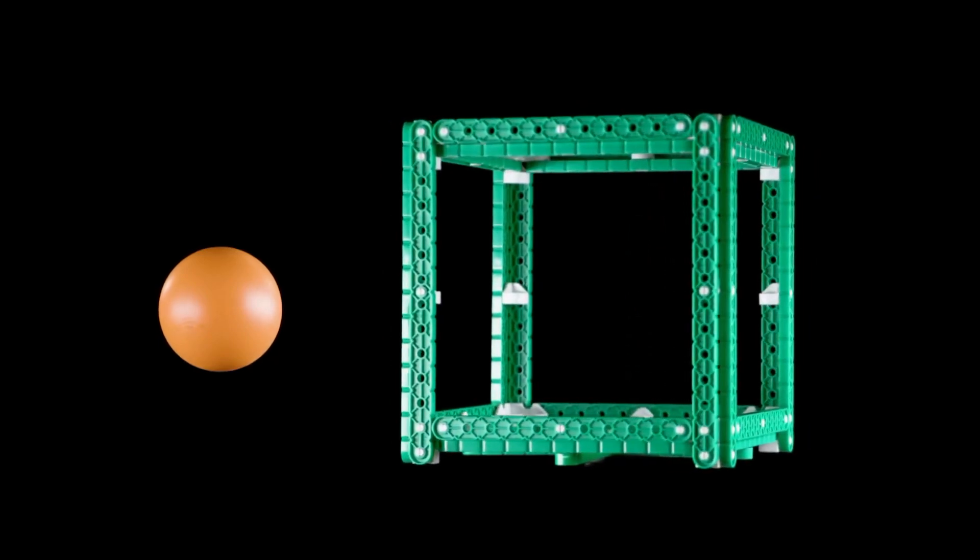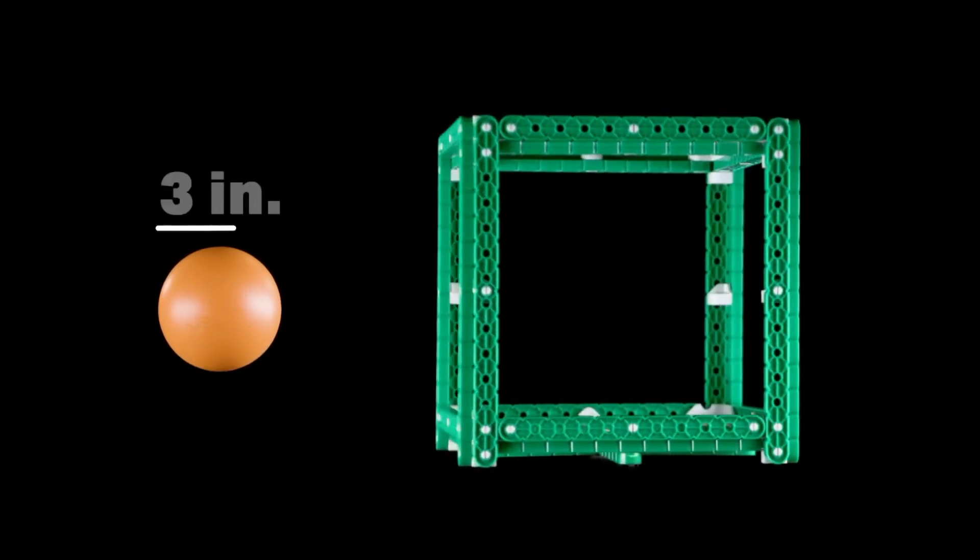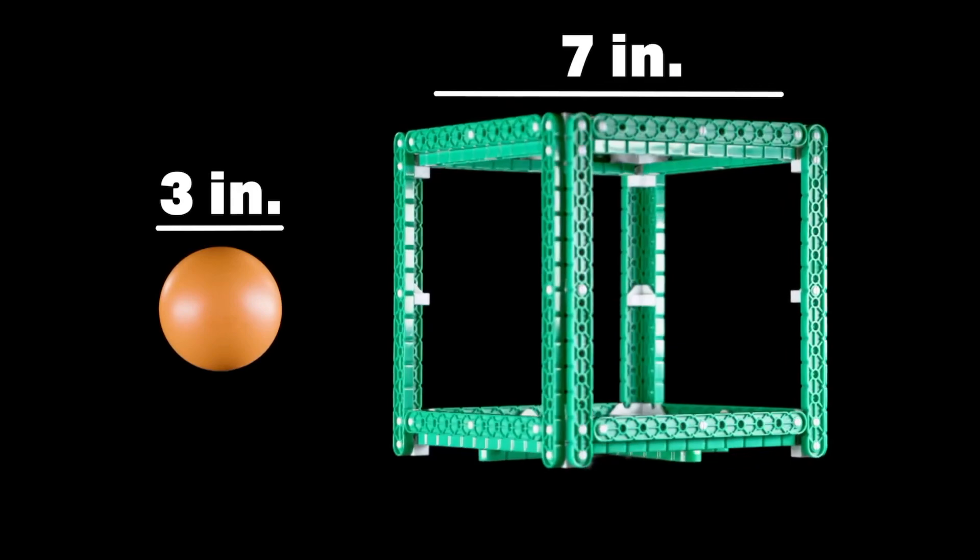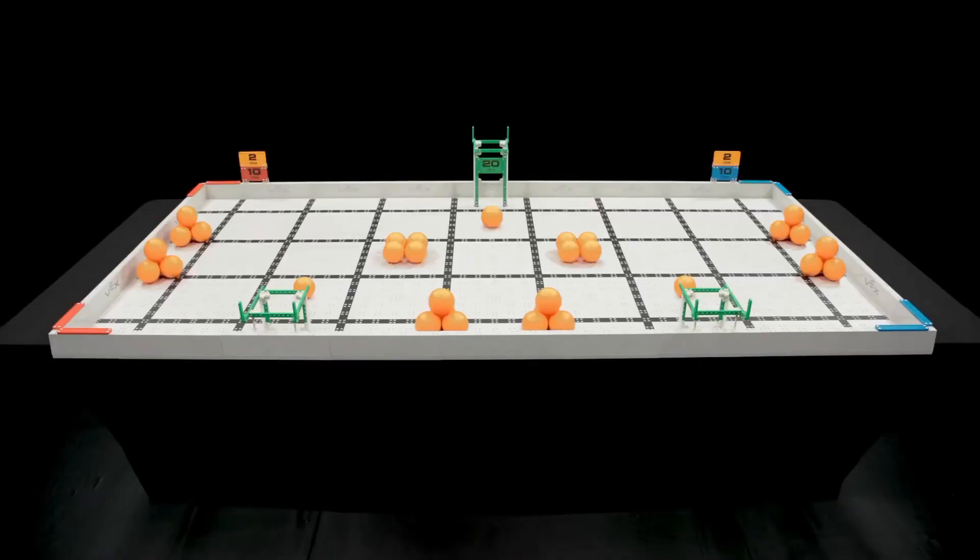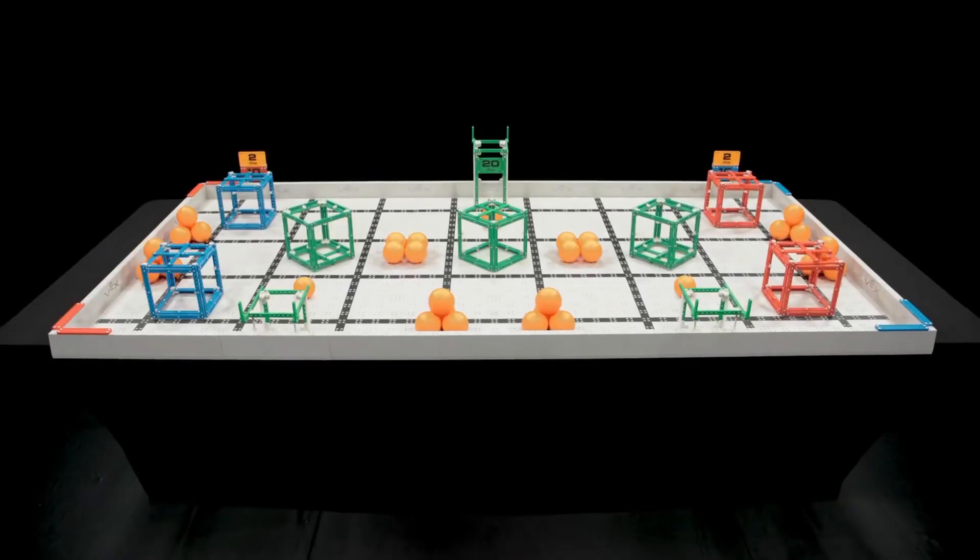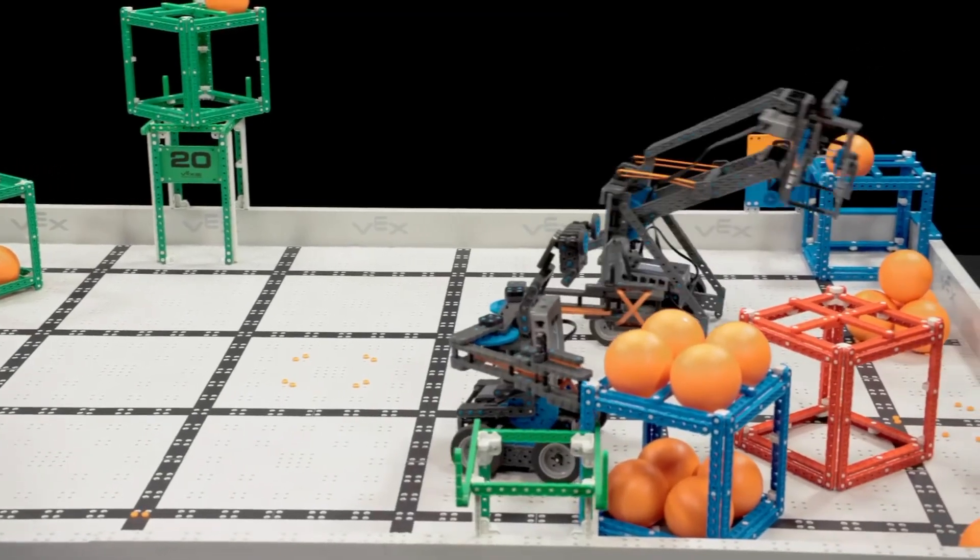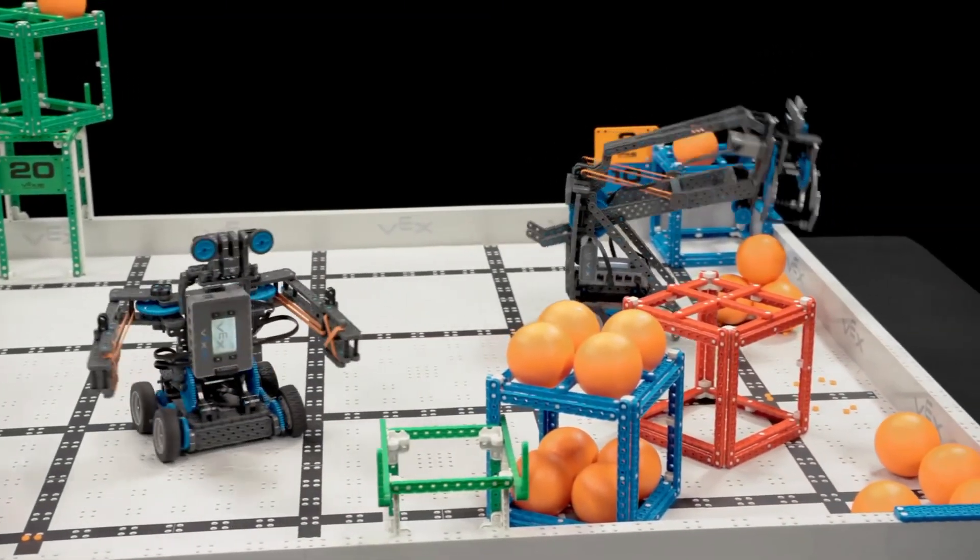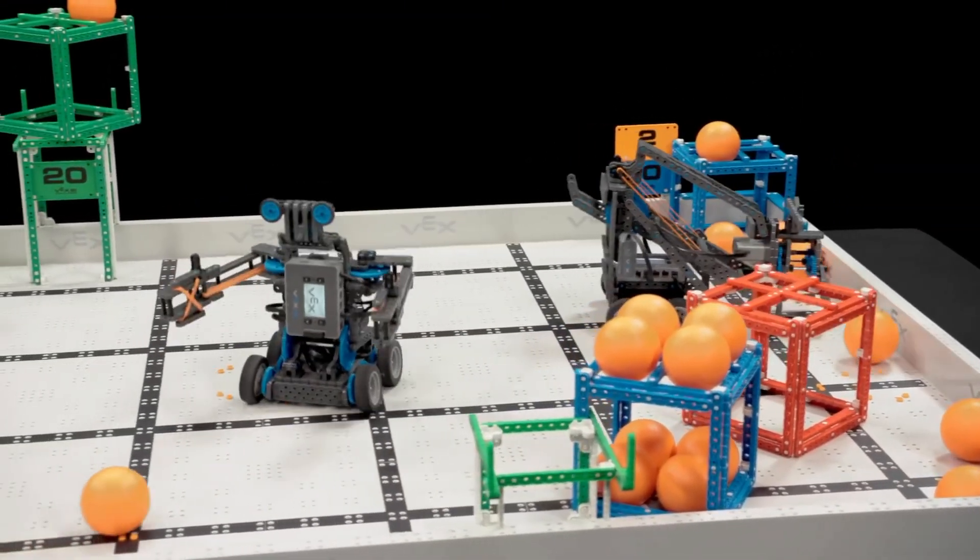The scoring objects in VEX IQ Challenge Squared Away are 3-inch diameter balls and 7-inch cubes. There are a total of 35 balls and 7 cubes on the field. The object of the game is to score as many points as possible with your alliance partner in one of two ways.